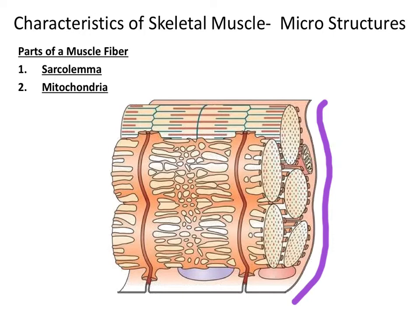The other organelle that we will mention is the nucleus. The nucleus is like the control center of a cell. A muscle fiber is multinucleated, meaning that it can have many nuclei per cell. The space between the sarcolemma and the organelles is filled by a cytoplasm in a muscle fiber known as the sarcoplasm.